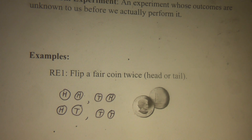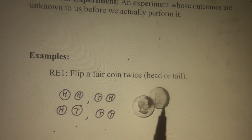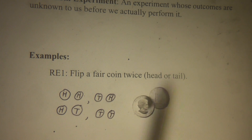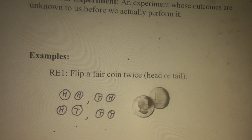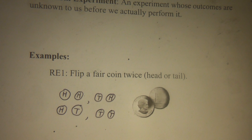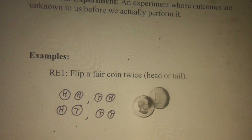In this example, first throw we see a head, second throw we see a tail. So, a random experiment is one whose outcomes are unknown to us before we actually perform it.